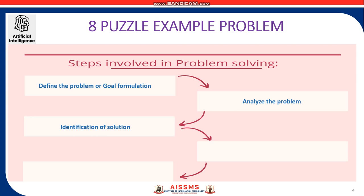The third step is identification of solution. The fourth step is choosing the best solution. So, an agent with several immediate options of unknown value can decide what to do by first examining different possible sequences of action that lead to states of known value and then choosing the best one. This process of looking for such a sequence is called search.